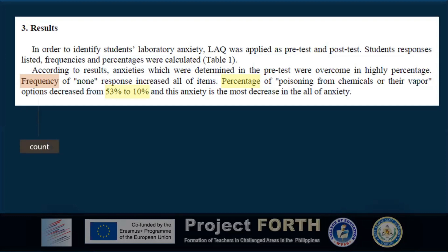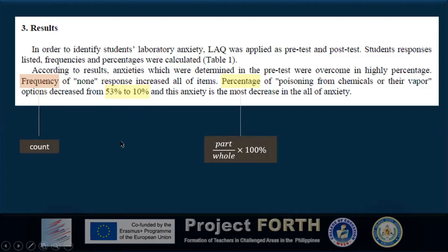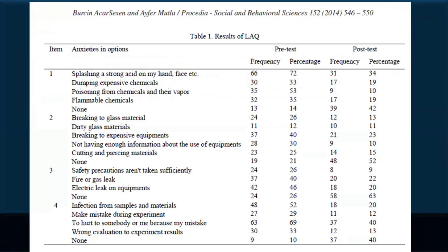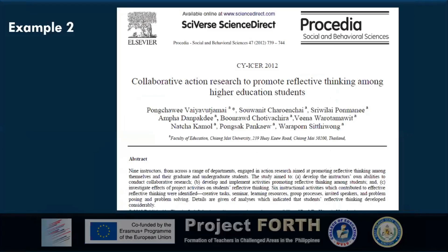Frequency is straightforward — you just count. For percentage, the formula is simply part divided by whole, times 100. As shown in the sample, there is a decrease from 53 percent to 10 percent, but there is no explanation of whether such a decrease is statistically significant. The researcher also included a table showing both frequency and percentage.